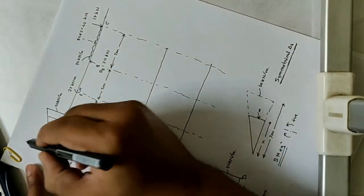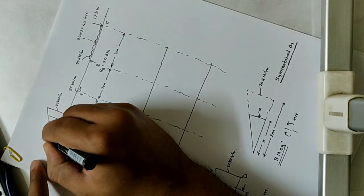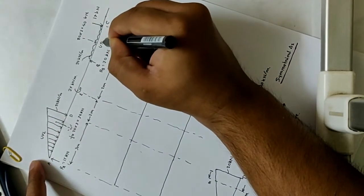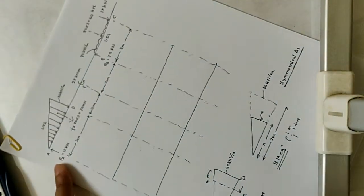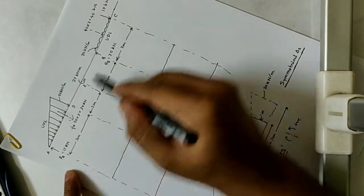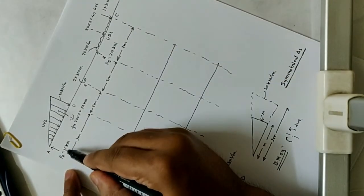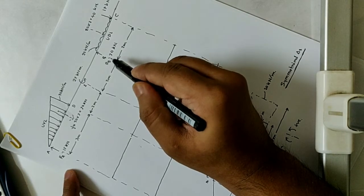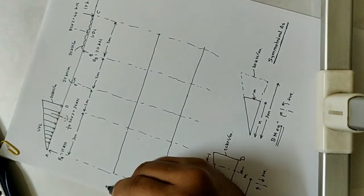There is a questionnaire that has a UVL and a UDL. We have already calculated the reaction forces at A and B, which are 15 kN and 70 kN. I will start drawing the shear force diagram (SFD).